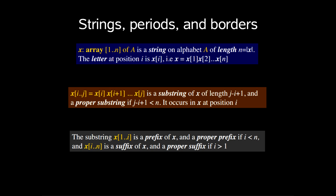The substring x1 up to i is a prefix of x, a proper prefix if i is less than n, and x i up to n is a suffix of x, and a proper suffix if i is larger than 1.